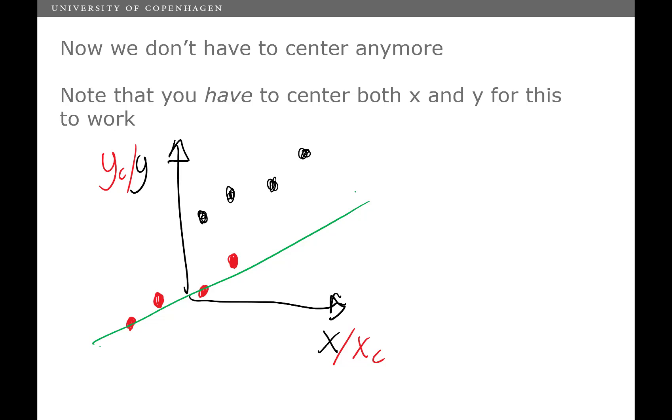And this is basically how we normally handle offsets when we do calibration models, when we do PLS or similar models. Now this also shows you that you really have to center both X and Y. It's not enough to center one of them. That's not going to do the trick. So if you do handle offsets this way, you have to center both X and Y. Okay, end of part one. Thanks.